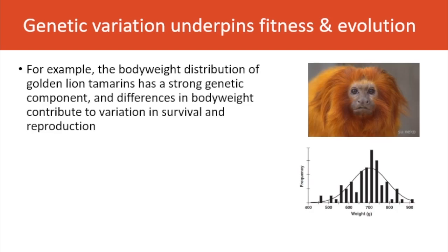For example, the body weight distribution of golden lion tamarins has a strong genetic component, and differences in body weight, as you can see in this frequency histogram, contribute to variation in survival and reproduction.